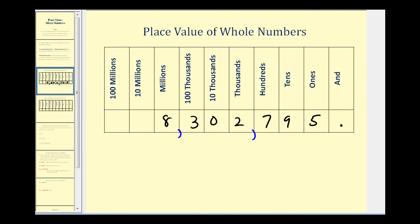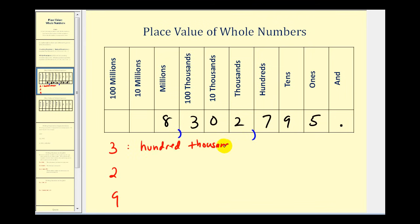So if we wanted to practice identifying place values, this three would be in the hundred thousands place value. The two would be in the thousands place value. And the nine would be in the tens place value.